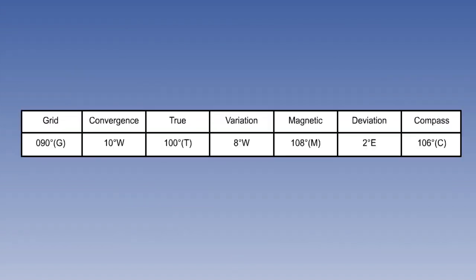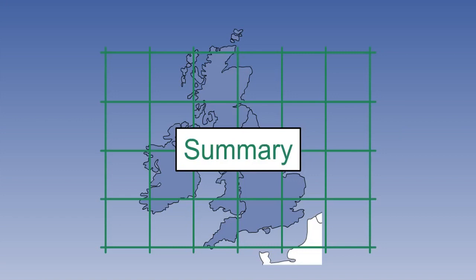And finally, we showed that converting from grid to true follows the same simple rules as converting from true to compass. But note that the grid and convergence columns go on the left, if we are going left to right from true to compass. That concludes this lesson. We will study steering by compass or gyro when using grid next.